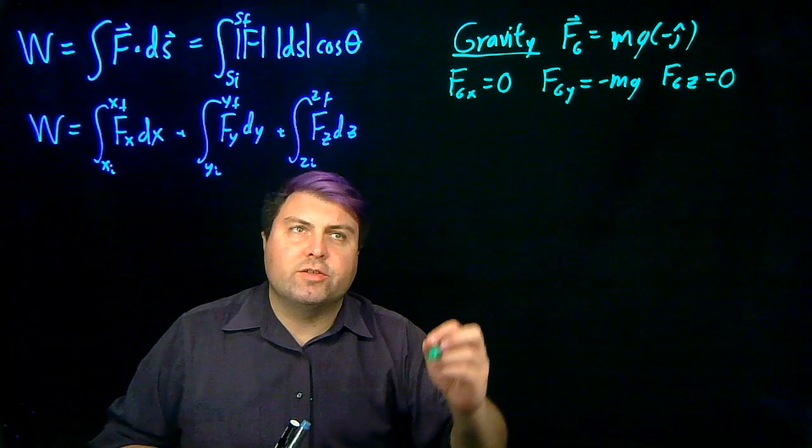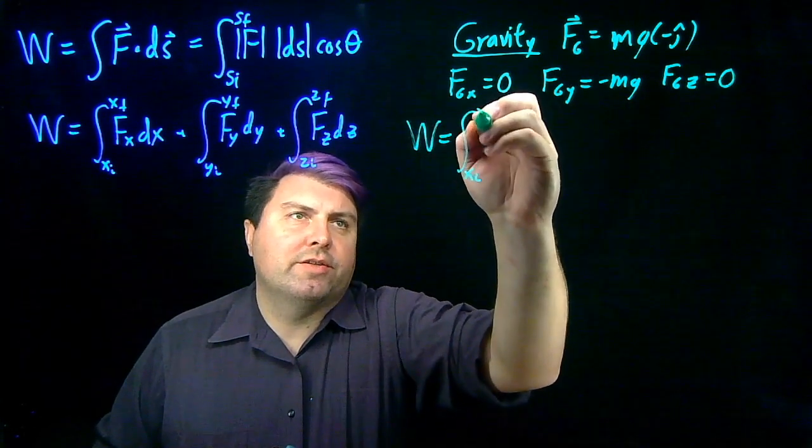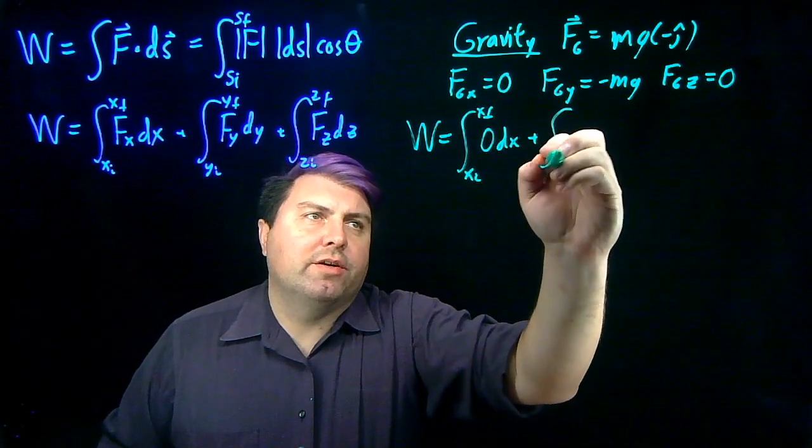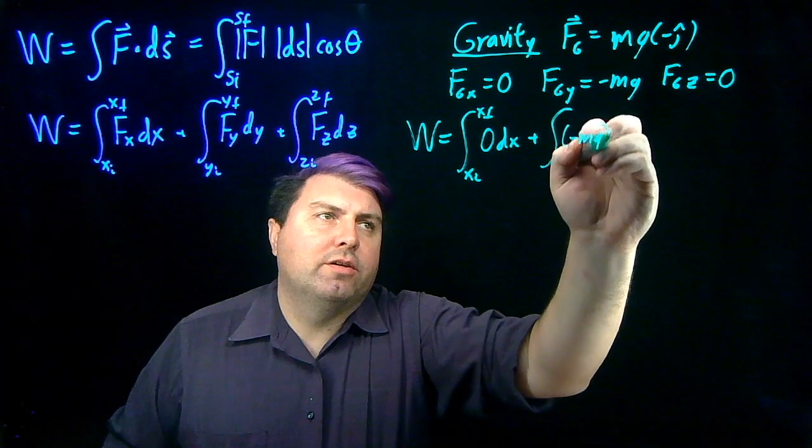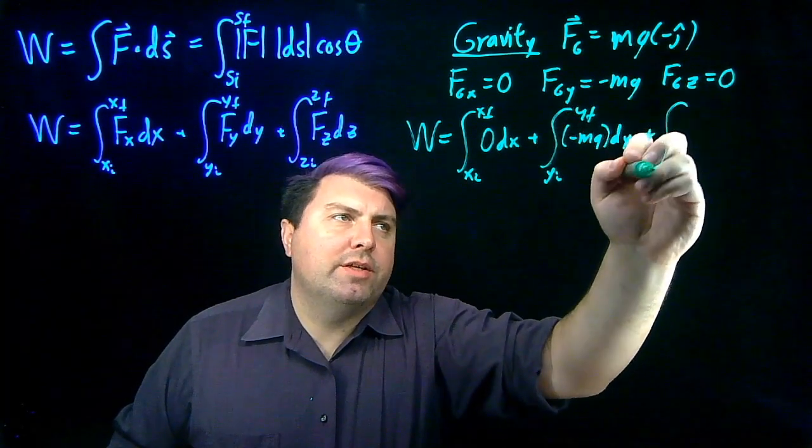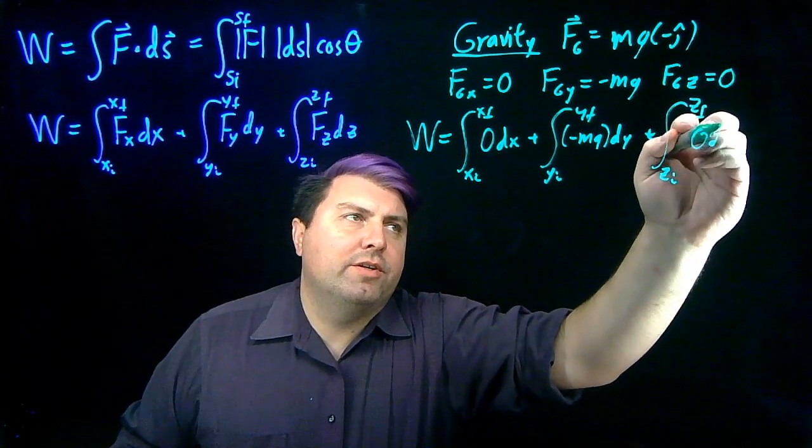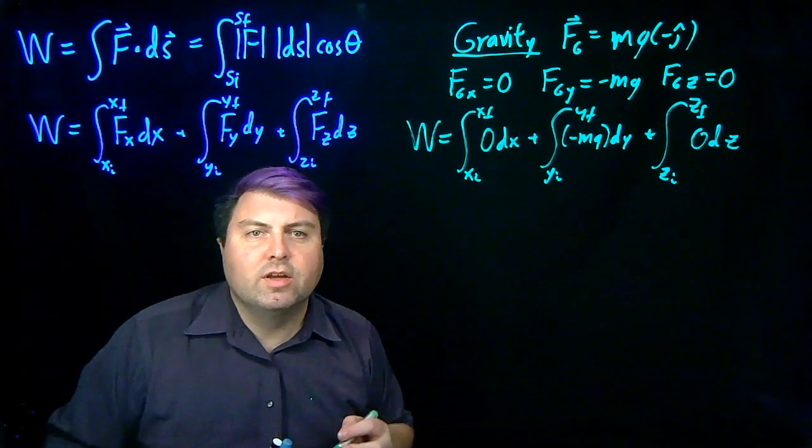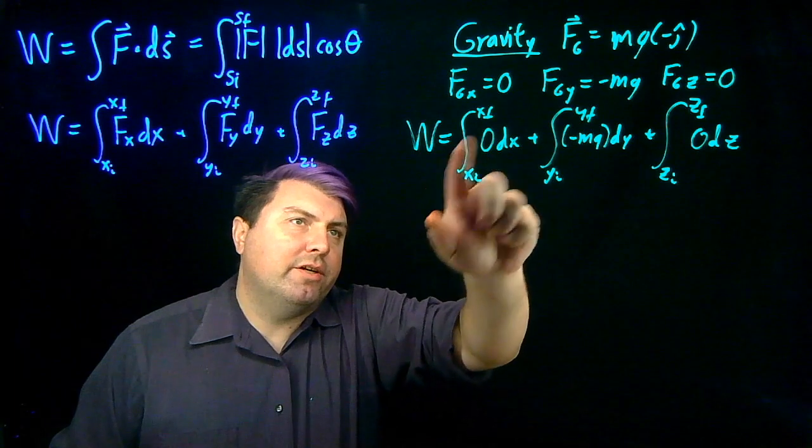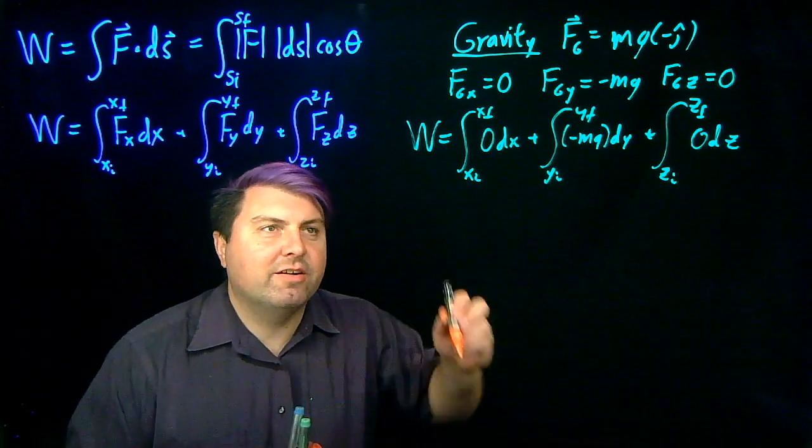So now I can look at this work. And I will get the integral from x initial to x final of zero dx plus the integral of negative mg dy from y initial to y final plus the integral from z initial to z final of zero dz. Okay, so with this then, a definite integral of zero is zero. So we can nicely and easily cross this off for ourselves.